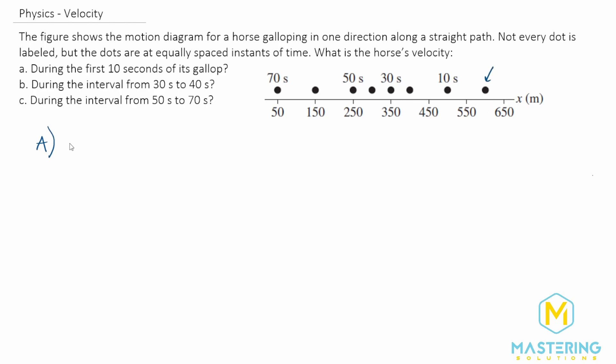let's write down the formula for velocity. We know that velocity is the change in x over the change in time. Delta anything always means final minus initial. So we have x final minus x initial over the change in time.